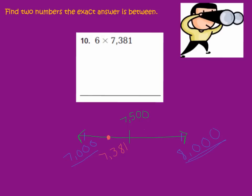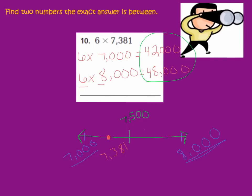So we would need to multiply our 6 times 7,000 and then times 8,000. Let's go ahead and multiply. We have 6 times 7 for our basic facts, which is 42. Then we add in our three zeros for our place value holders. So we have 42,000. And for our 6 times 8,000, we have 6 times 8, which is 48. And then our three zeros for our place value holders. So we have 48,000. So these are the two numbers, the two estimates, that our exact answer, if we were to multiply 6 times 7,381, would be between.